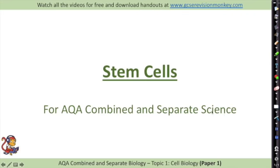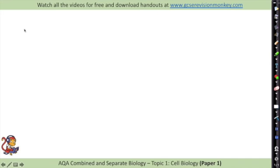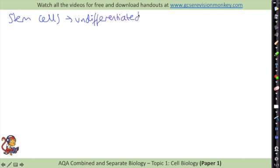Still on the theme of cells, we're going to talk about some very special cells called stem cells. Stem cells are special because they are undifferentiated - they haven't been switched on and turned into a very specific specialised cell. They still have the ability to become any type of cell - that's what undifferentiated means.